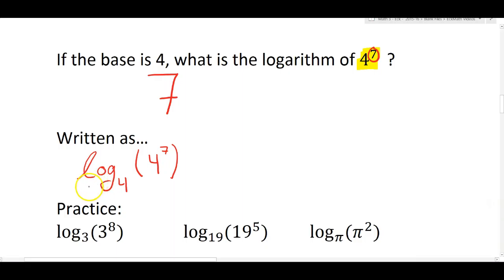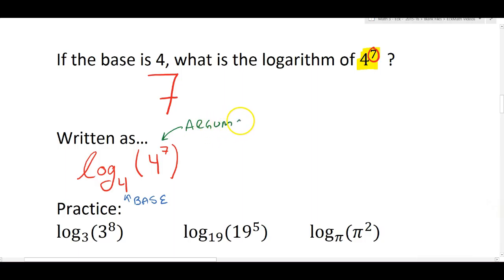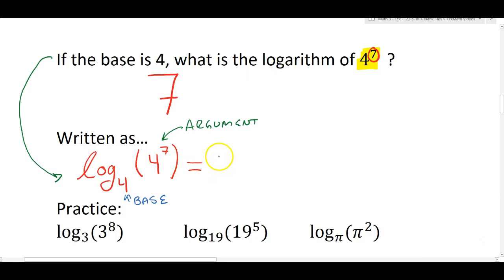The pieces of this expression: there's the word log, this four is the base, and everything in the parentheses is called the argument. That's a fancy term — if you ever need to tell the base from the thing inside the parentheses, it's called the argument. And log base four of four to the seventh is asking exactly the same question as before. So what we'll write in math is that log base four of four to the seventh equals seven.